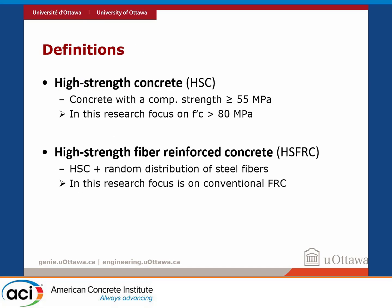Starting with some definitions, just so we are on the same page. High-strength concrete is usually defined as concrete with a compressive strength greater than or equal to 55 MPa. In this research, we're focusing on greater than 80 MPa, because this is where the research gap was. High-strength fiber-reinforced concrete is just HSC with a random distribution of steel fibers. We're using conventional fiber-reinforced concrete — not more advanced FRC like UHP FRC — just regular high-strength concrete with a moderate amount of fiber added.